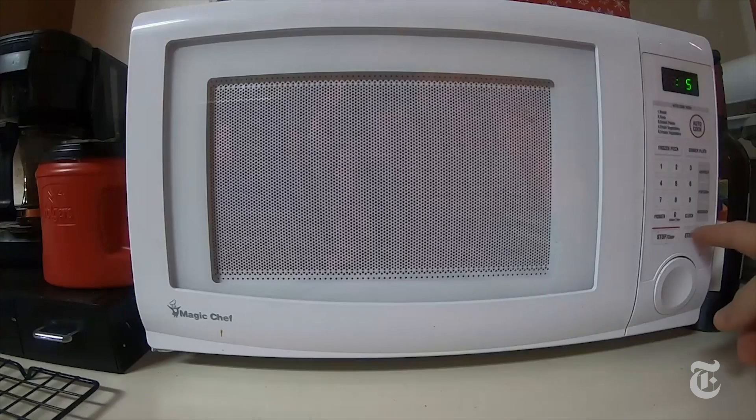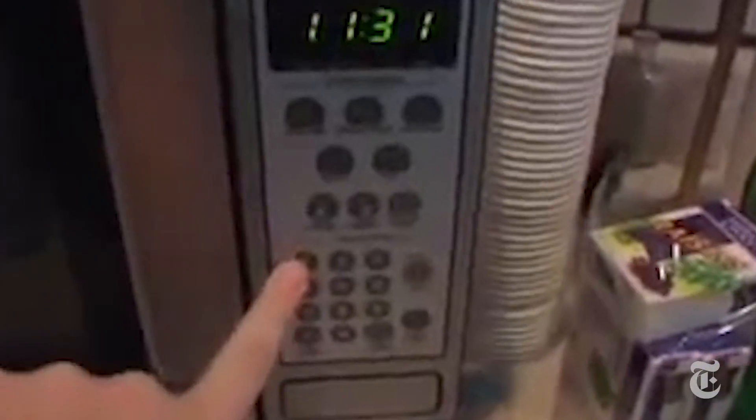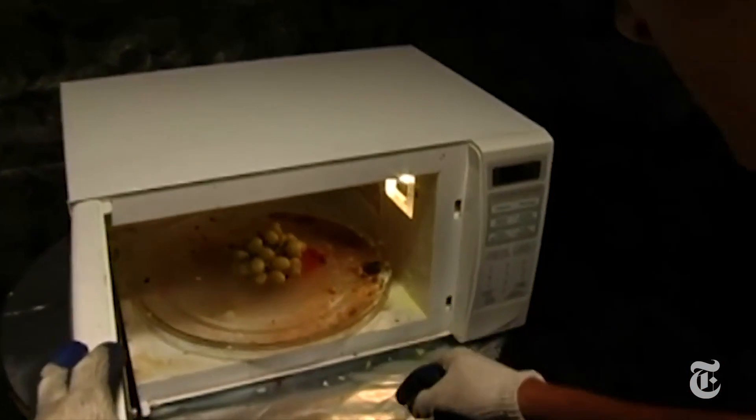For 20 years, people have been microwaving two grape halves connected by a bridge of skin to create sparks, light, plasma. There's a lot of juice from these, actually. A plasma is a superheated gas in which electrons have been stripped from the molecules. Lightning is a common example.